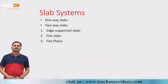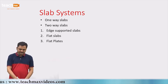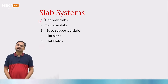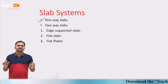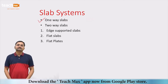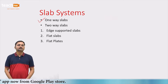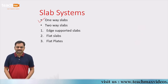Welcome to TeachMax videos. Let us move to the design of flat slabs. We have already designed one-way slabs. For one-way slabs, when the Ly by LX ratio is greater than 2, we provide the reinforcement along the shorter dimension. For two-way slabs, reinforcement is provided along both the longer and shorter directions, and the Ly by LX ratio is less than 2.